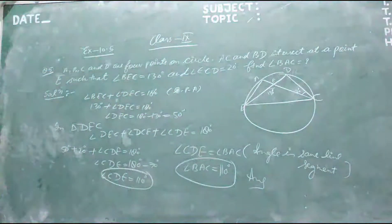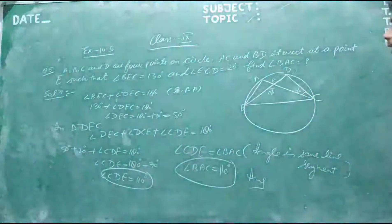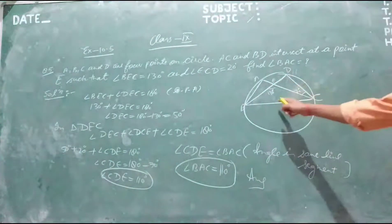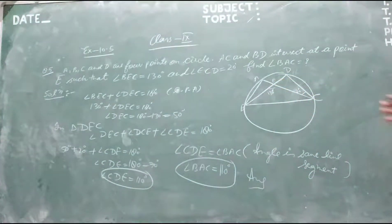In this question given here, ABCD are 4 points on a circle. AC and BD intersect at E point.